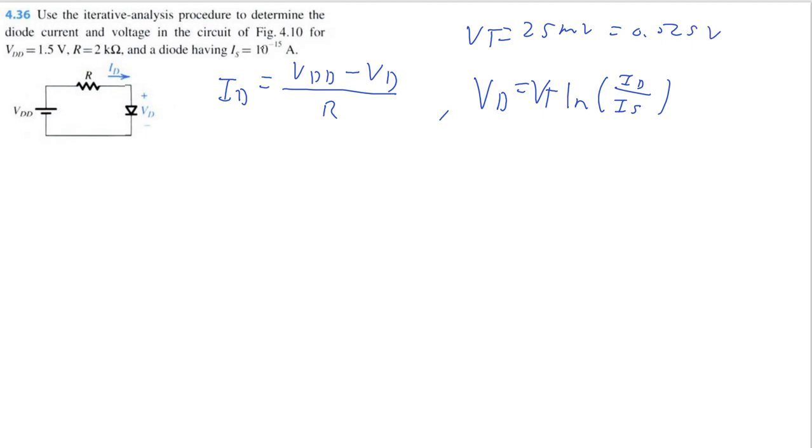Our goal is to repeatedly solve for ID and VD over and over again, just keep iterating through it until we get a pretty close number for each of these and we keep getting pretty much the same number every time. Because what's going to happen is every time we solve, we're going to get a little more accurate number. So we're going to repeat this as many times as we need to.